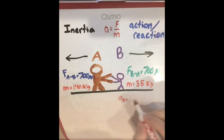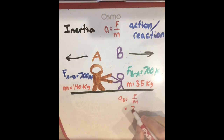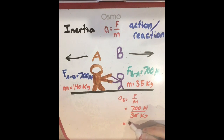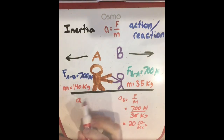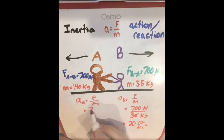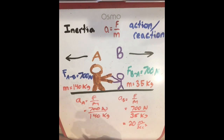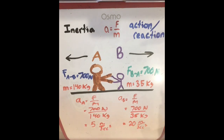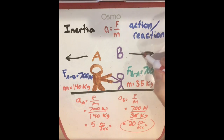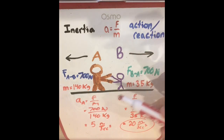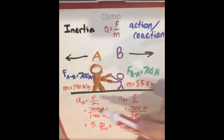Let's calculate the accelerations. For person B: 700 Newtons divided by 35 kilograms gives an acceleration of 20 meters per second squared. For person A, the force is the same — that's Newton's Third Law — but the mass is 140 kilograms, so person A accelerates at only 5 meters per second squared. Person B has the larger acceleration and will accelerate away at a higher rate because they have less mass, not because person A pushes harder. The forces are equal — don't confuse the accelerations you see with the forces acting on the objects.